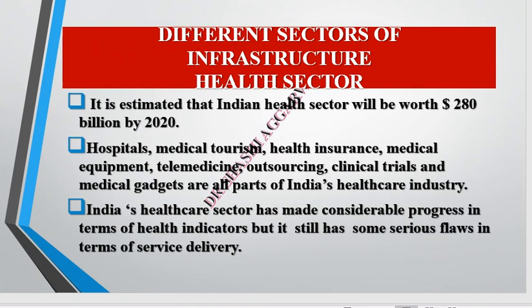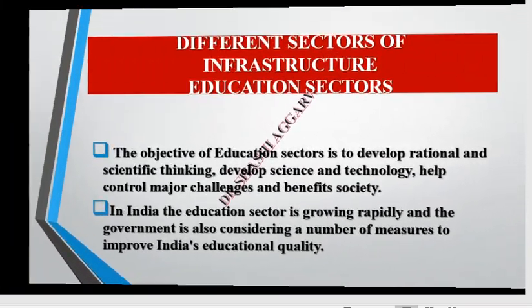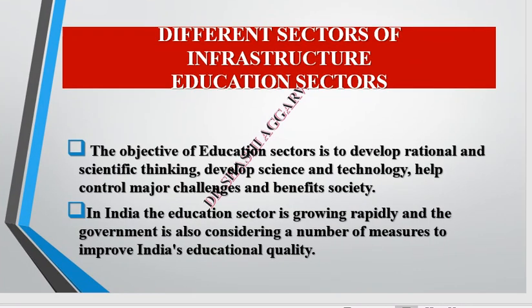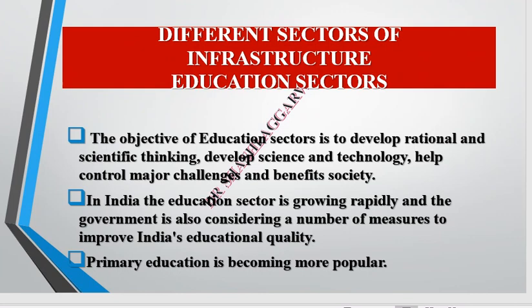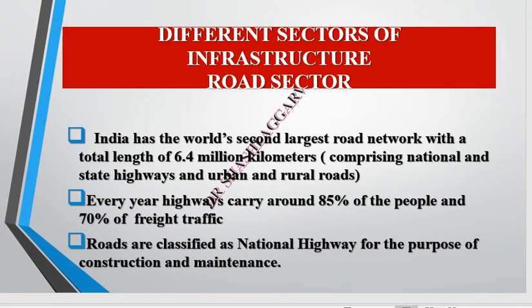The objective of the education sector is to develop rational and scientific thinking, develop science and technology, and provide benefits to society. The education sector is growing with technology and the government has adopted many measures to improve education quality, with primary education becoming more popular. Regarding roads, India has the world's second largest road network, with a total length of 6.4 million kilometers including national and state highways and urban and rural roads. About 85% of people and 70% of freight traffic is carried on highways.